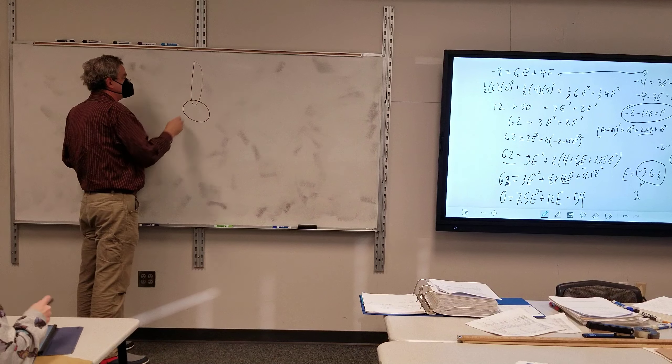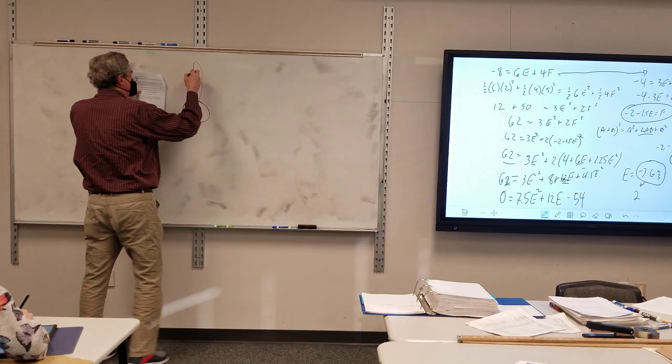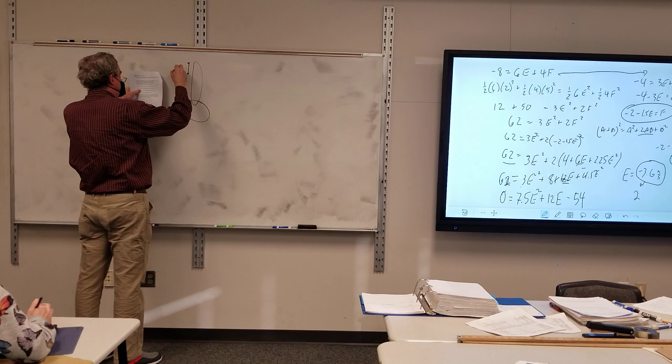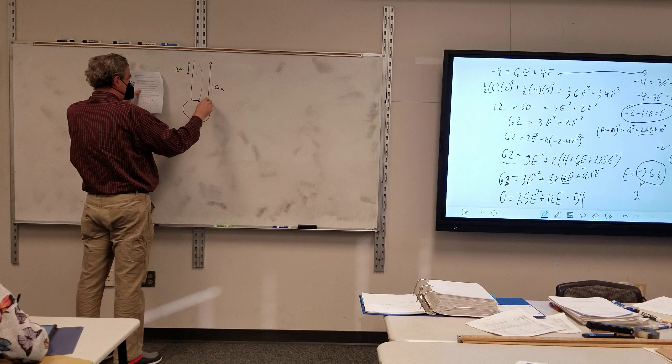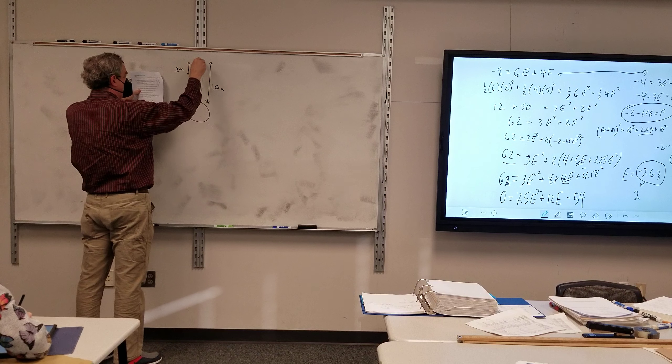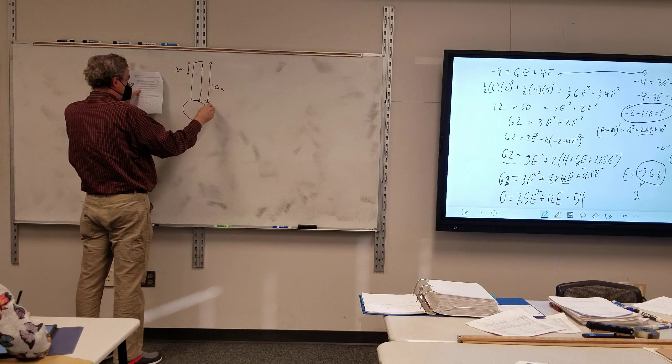And then I have 6 and 4 as my masses. E and F, those are my finals. And then the relative speed of approach, so I did 2 minus 5. Oh!